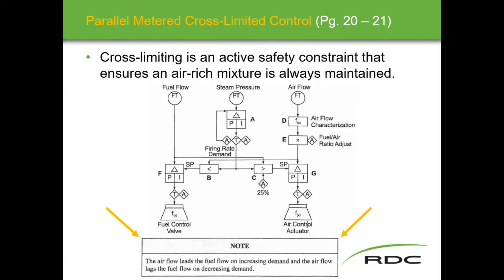That's the safest and most environmentally friendly way to operate — the parallel metered cross-limited control scheme. On an increase one selector block is in play; on a decrease the other selector block is in play. Read through the ILM for exactly which selector does what and when.